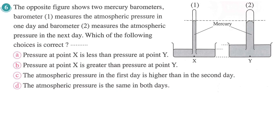The opposite figure shows two mercury barometers. Barometer one measures atmospheric pressure on one day. Barometer two measures atmospheric pressure on the next day. Which of the following choices are correct?